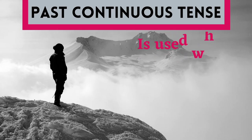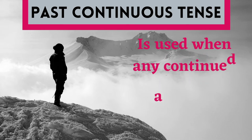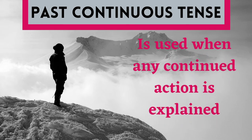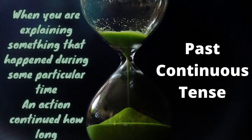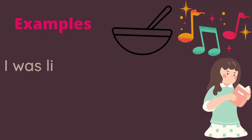Past continuous tense is used when any continued action is explained — when we are explaining something that happened during a particular time and the action continued. To make it easy, let's see some examples.